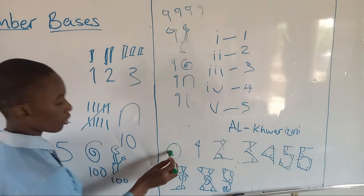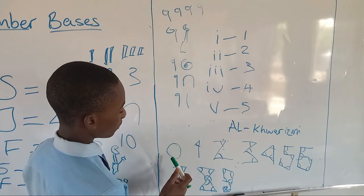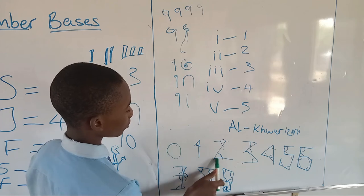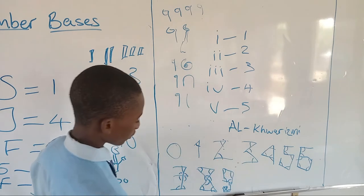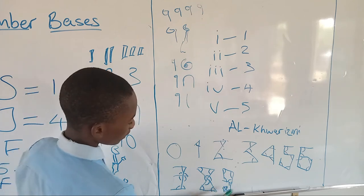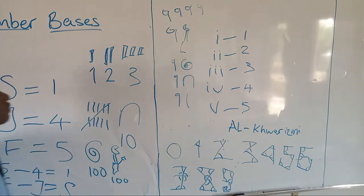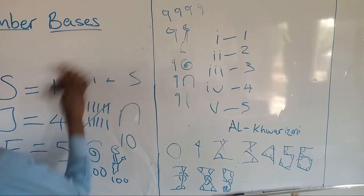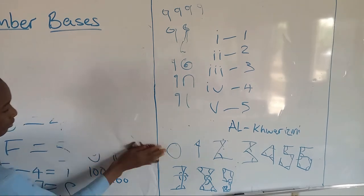Like the base two number of counting, which has one and zero. Base three, which has zero, one, and two. Base four, which has zero, one, two, three, and so on until we get to base ten.